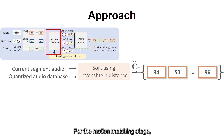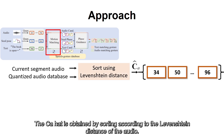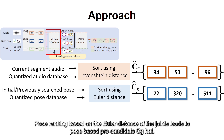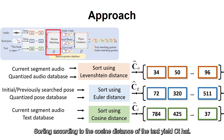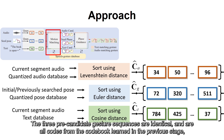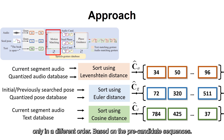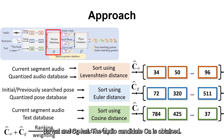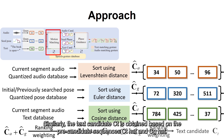For the motion matching stage, the candidate Ĉ_A is obtained by sorting according to the Levenshtein distance of the audio. Pose ranking based on the Euler distance of the joints leads to pose-based pre-candidate Ĉ_G. Sorting according to the cosine distance of the text yields Ĉ_D. The three pre-candidate gesture sequences are all codes from the codebook learned in the previous stage, only in a different order. Based on the pre-candidate sequences Ĉ_A and Ĉ_G, the audio candidate C_A is obtained. Similarly, the text candidate C_T is obtained based on the pre-candidate sequences Ĉ_T and Ĉ_G.